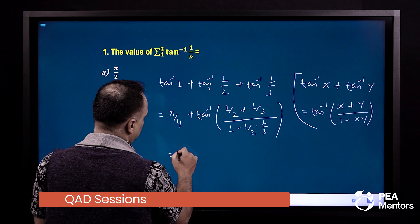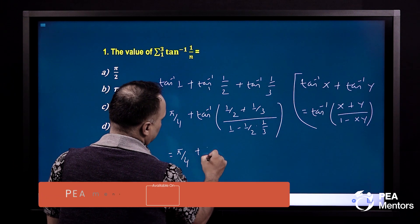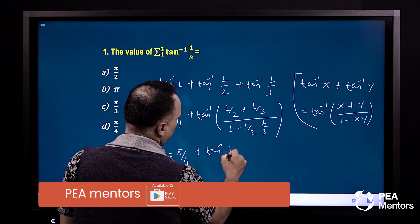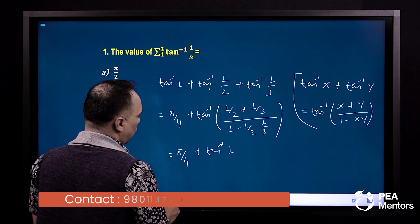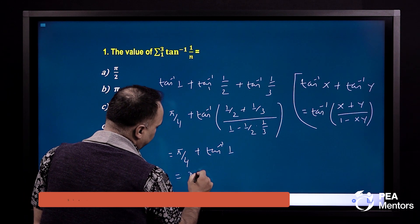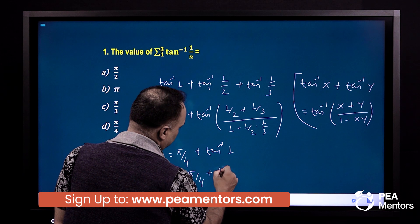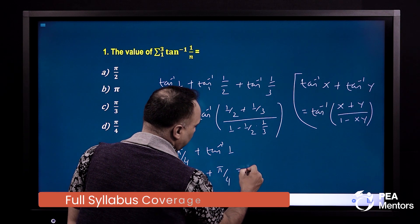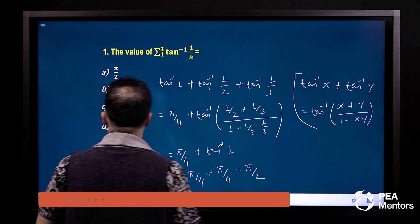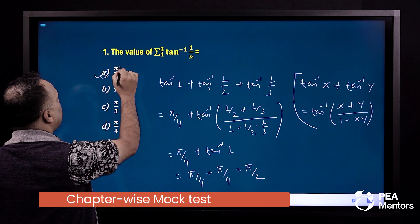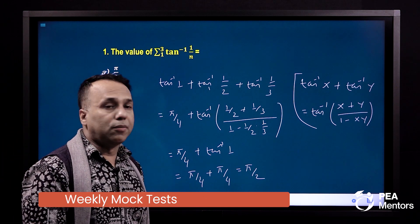tan inverse x plus y upon 1 minus xy. Kati yayoyo? tan inverse 1. tan inverse 1 mene kati yoy? Pi by 4. tan inverse 1 mene pi by 4. We have to answer pi by 2 option A. This is the answer.